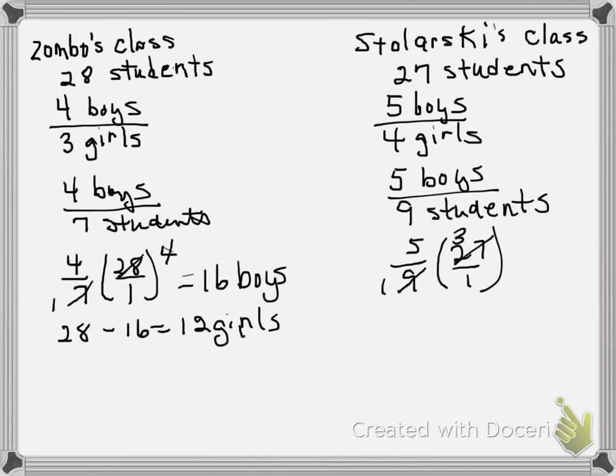That gives me 15 boys in Stolarski's class. 27 minus 15 tells me that there are 12 girls in Stolarski's class.